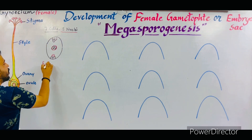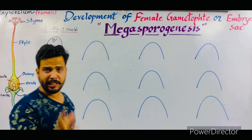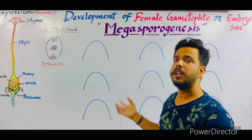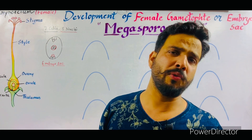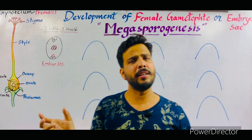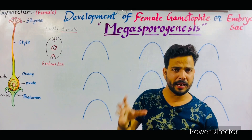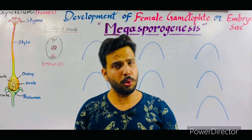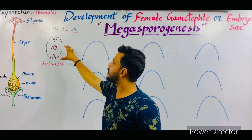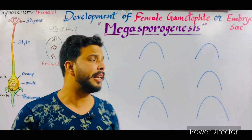So the embryo sac consists of total seven cells and eight nuclei. In this lecture we will discuss how these seven cells and eight nuclei are produced inside the female gametophyte. The term female gametophyte means: female is the female part of the flower, and gametophyte means the plant which consists of gametes — so if the plant forms female gametes, it is termed as female gametophyte, which is also known as the embryo sac.